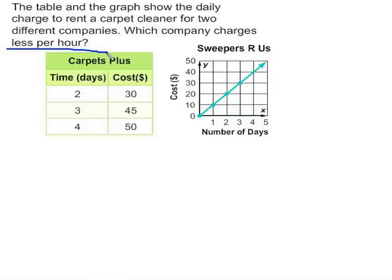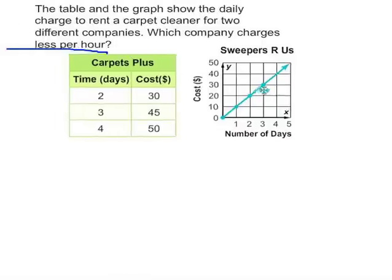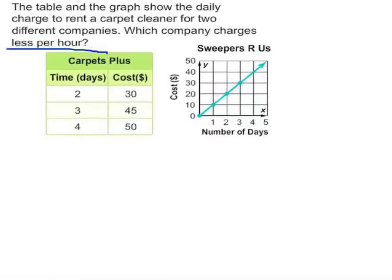Alright, so let's start going over this. I know that at Carpets Plus, for every 1 day that goes by, it costs $15. And there's actually a mistake here. This should actually be 60. Okay, so I know for every 1 day that goes by, there's an increase of $15 in the cost.